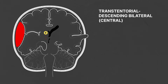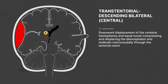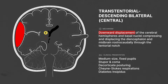Transtentorial bilateral, also known as central herniations, results from downward displacement of the cerebral hemispheres and basal nuclei compressing and displacing the diencephalon and midbrain rostrocaudally through the tentorial notch. This leads to medium-sized fixed pupils, stupor and coma, decorticate posturing, Cheyne-Stokes respirations, and diabetes insipidus.